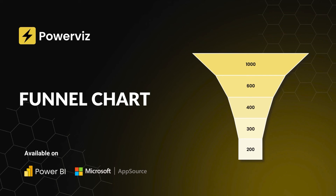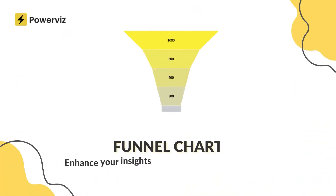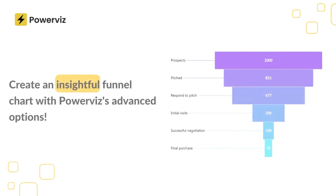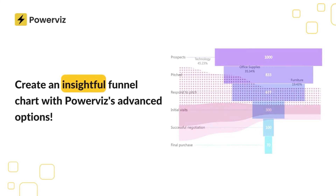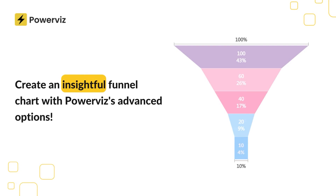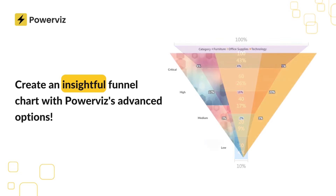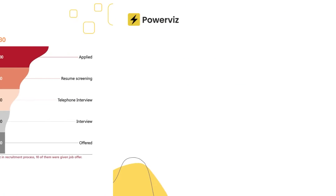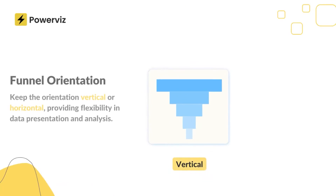Hello and welcome to PowerVis Visuals for Power BI. In this guide, we will deep dive into the world of business insights with a custom visual called the Funnel Chart. The PowerVis Funnel Chart is a versatile tool packed with features allowing you to track data movement through different stages effortlessly. From sales pipelines to website traffic, this visual offers a wealth of possibilities.